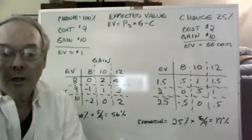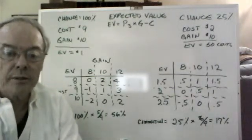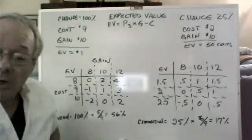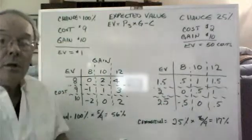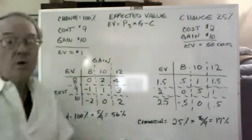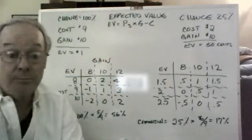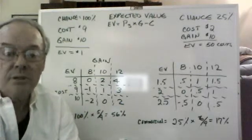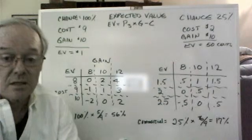I'm going to follow up now on the first video that I put together that talked about expected value. As you remember from our first video, we talked about expected value could be calculated using the simplified formula of expected value equals probability of success times the gain minus the cost.